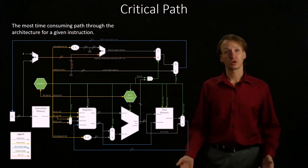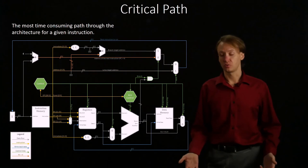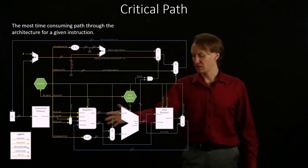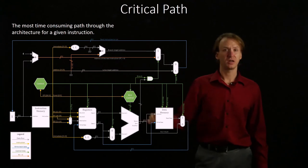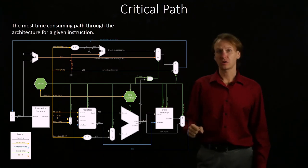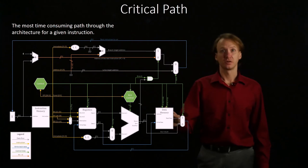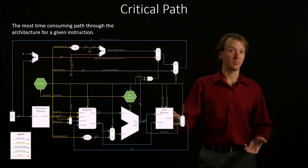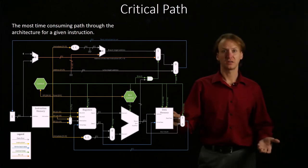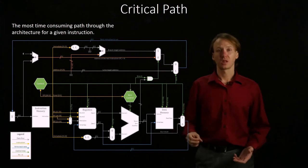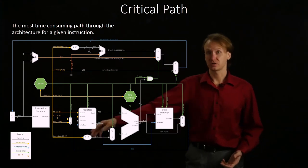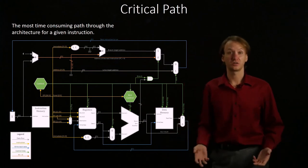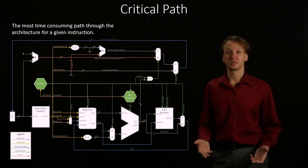The store word instruction is pretty similar to the load word instruction. We're going to go through the same main path, but this time we don't actually need to write anything back. Our critical path effectively ends once the data has been stored into data memory, because that's all we're asking this instruction to do for us. We don't technically need to include things like the mem2reg multiplexer and the second visit to the registers because they're not relevant to this instruction.